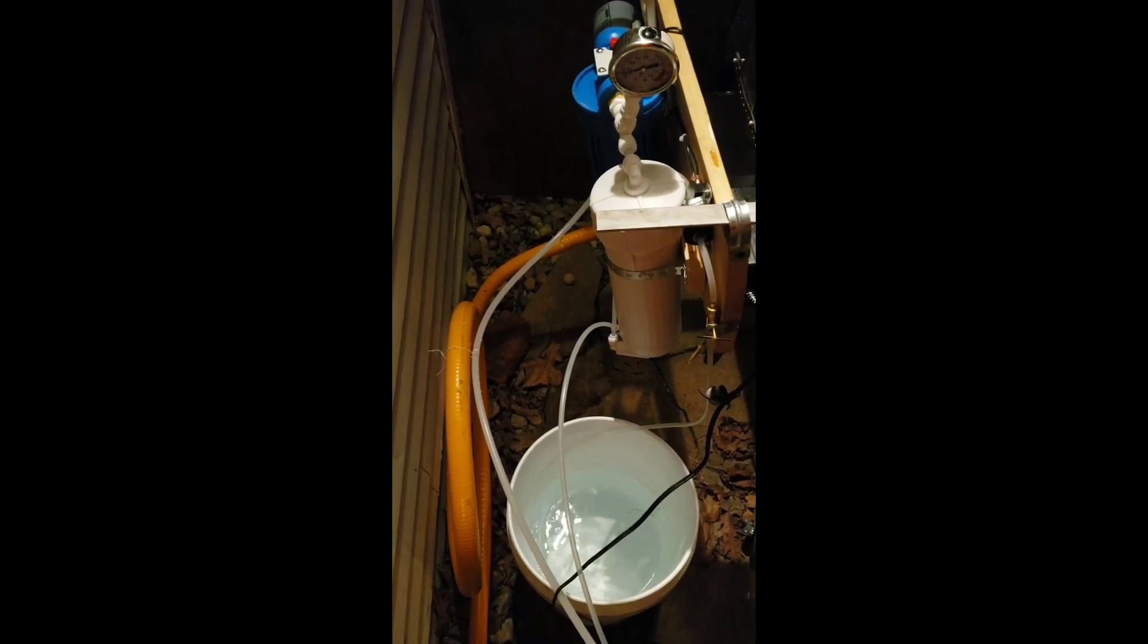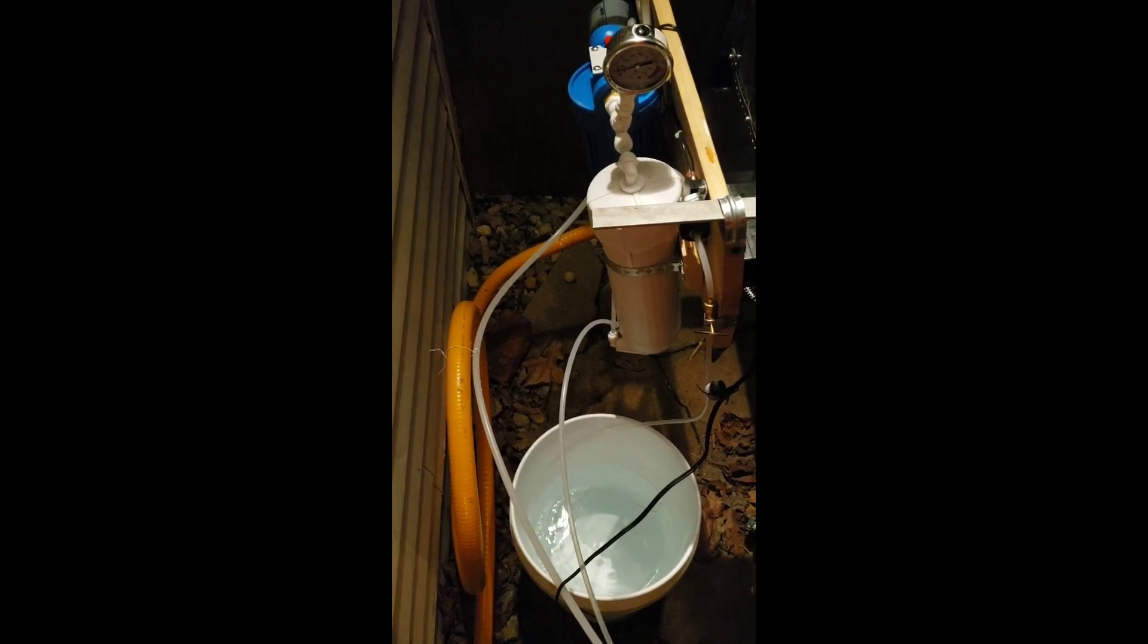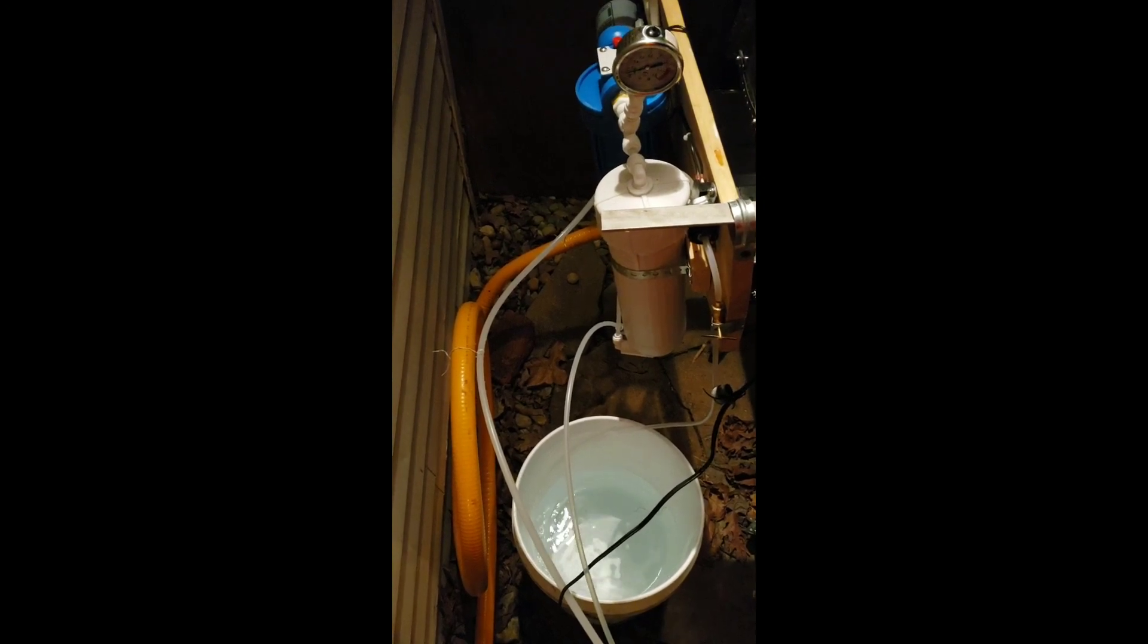We're going to keep that needle valve all the way open and we're going to run about 10 gallons of fresh permeate through the filter and the RO to rinse that sugar and anything else off of that membrane and keep it pretty clean.